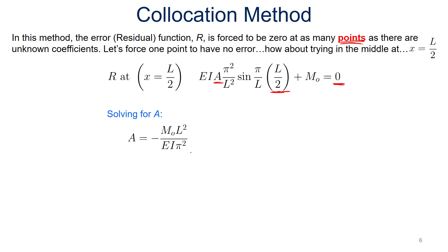Now if we solve for A, we come up with A is minus the moment length squared over modulus times the moment of inertia times pi squared. And we just substitute that A back into our assumed solution. This is our deflection equation using the collocation method.